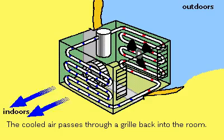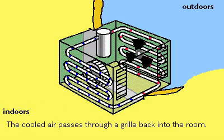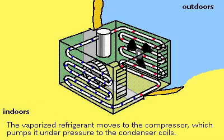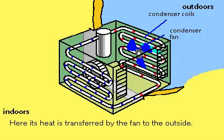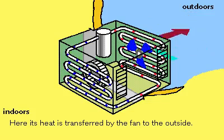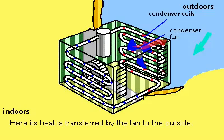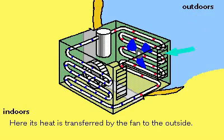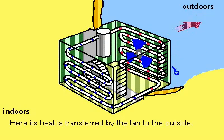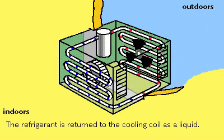The refrigerant gas is then compressed, increasing its temperature. To return to a liquid state, the refrigerant must give up its heat. The heat transfer is accomplished by having outdoor air blown through the condenser coils containing the compressed gas, thus cooling the gas and transforming it back to a liquid, which is then returned to the cooling coils.